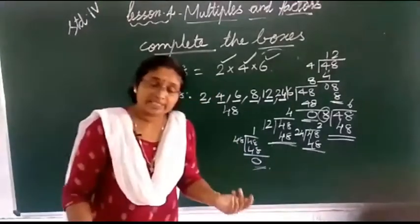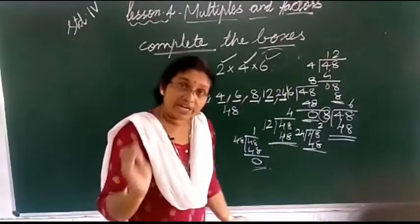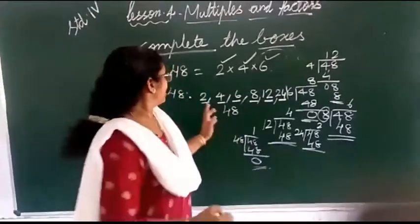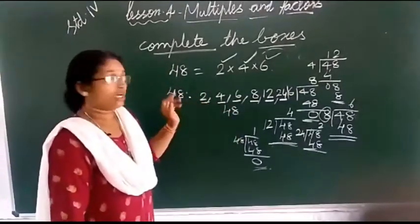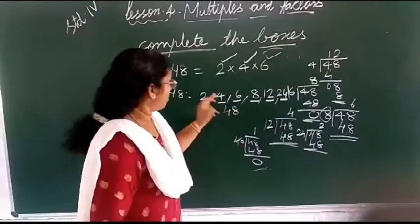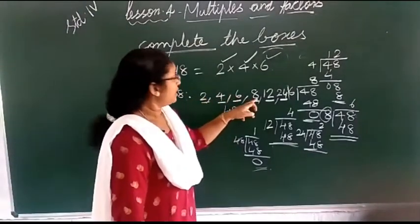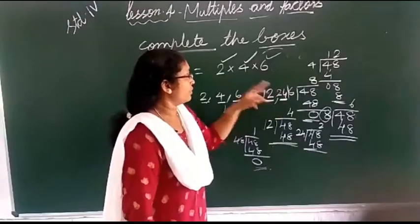All the numbers are equal to multiple. One is equal to multiple. 48 divided by 24, 24 divided by 4, 6 divided by 8 divided by 4. 48 is equal to 48.